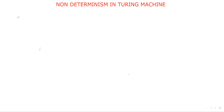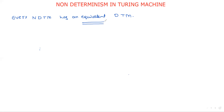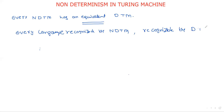In this session we will discuss that every non-deterministic Turing machine has an equivalent deterministic Turing machine. Both Turing machines express the same power. Every language recognized by a non-deterministic Turing machine can also be recognized by a deterministic Turing machine. That means if L is the language recognized by the NTM, then the same L can be recognized by the DTM, so those two Turing machines have the same power.